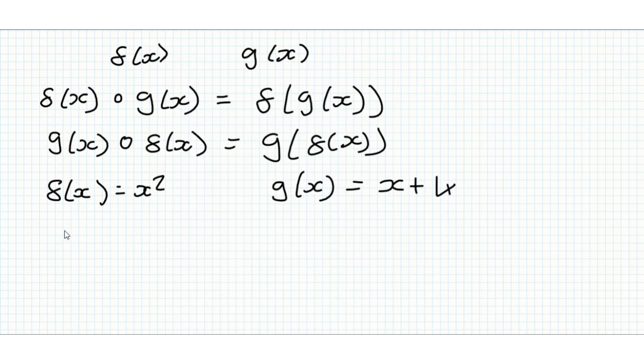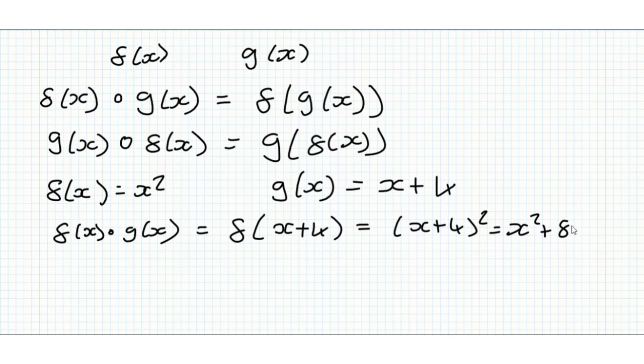So now f of x composed of g of x is equal to f of x plus 4, which is equal to x plus 4 squared. And if we want to multiply that out, we get x squared plus 8x plus 16.